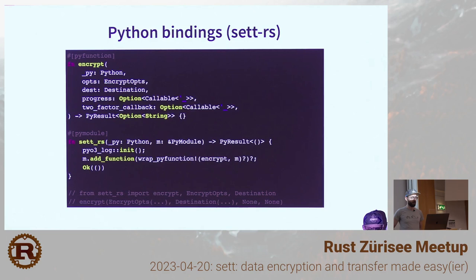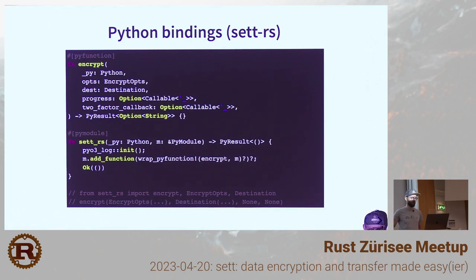PyO3 gives a lot, but it's still not perfect. For example, it doesn't work with generics, at least not yet. That's why the Python-facing API is a bit uglier than the internal Rust API shown on the previous slide.